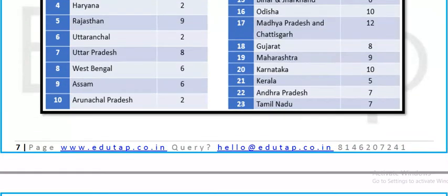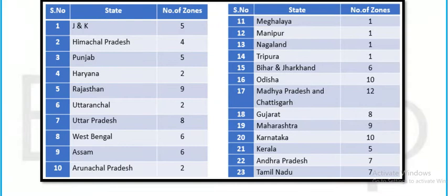In the ICAR classification, zones by state are listed. Madhya Pradesh has the highest number of zones among all states. The least number of zones among non-northeastern states is Haryana. Northeastern states like Meghalaya, Manipur, and Nagaland have just one zone each.